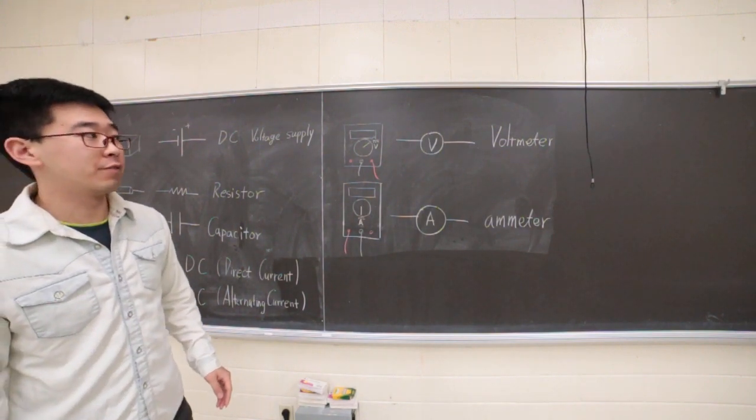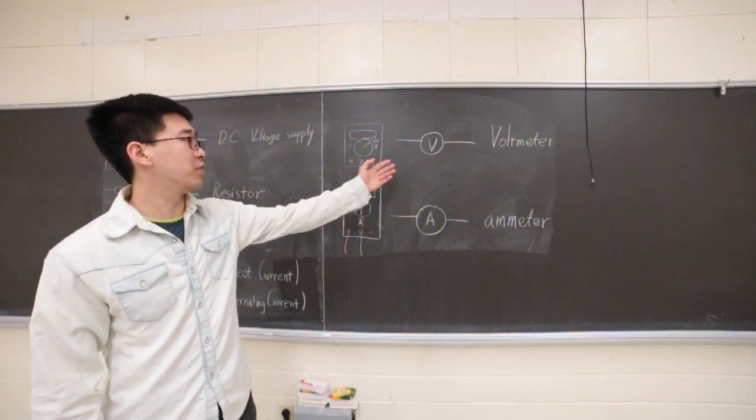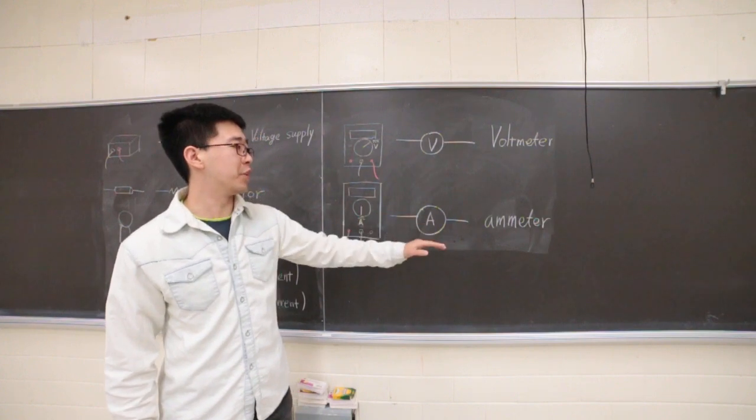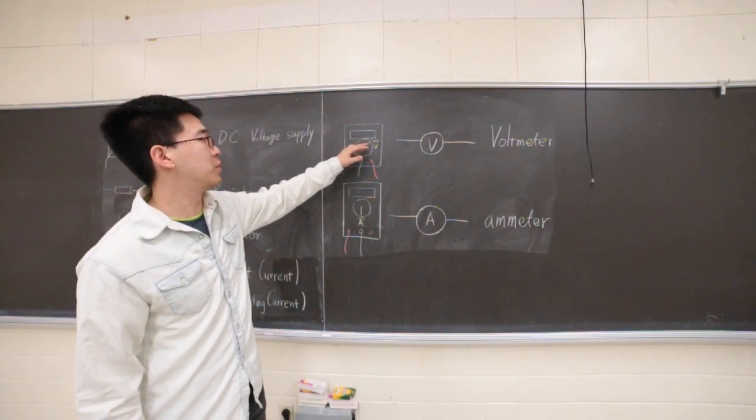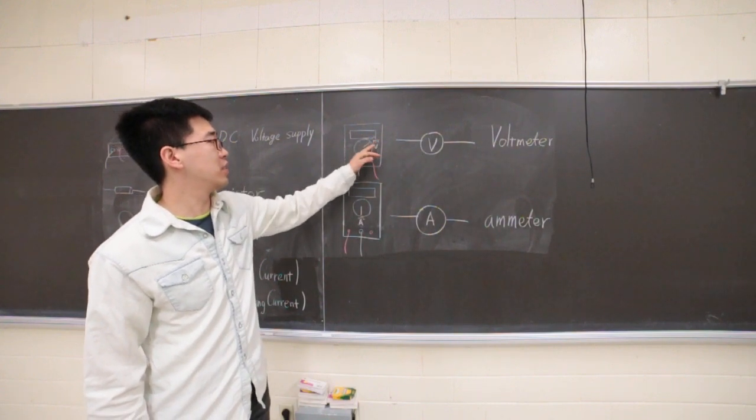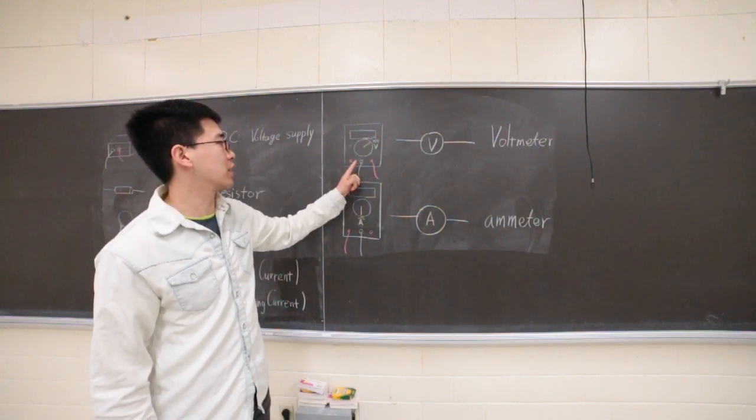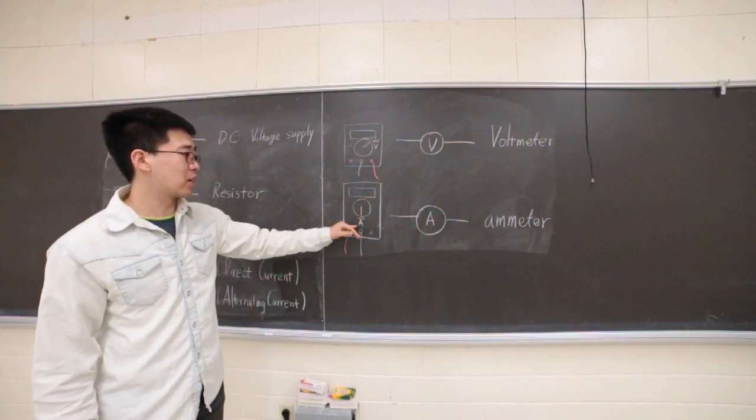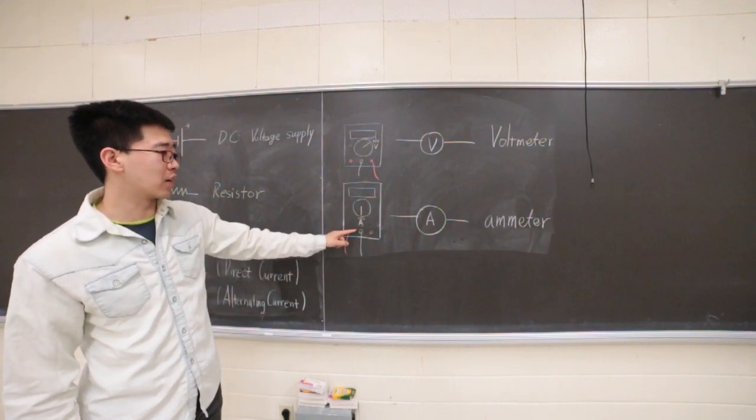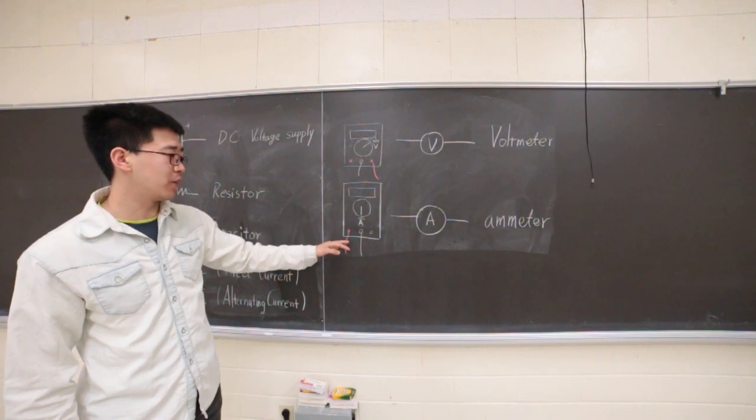And for measuring different types of quantities, we have voltmeters and ammeters. For measuring DC voltage, you change the knob to the DC voltage sign and connect to the middle and the right. For measuring DC current, you change the knob to DC current and connect to the left and middle.